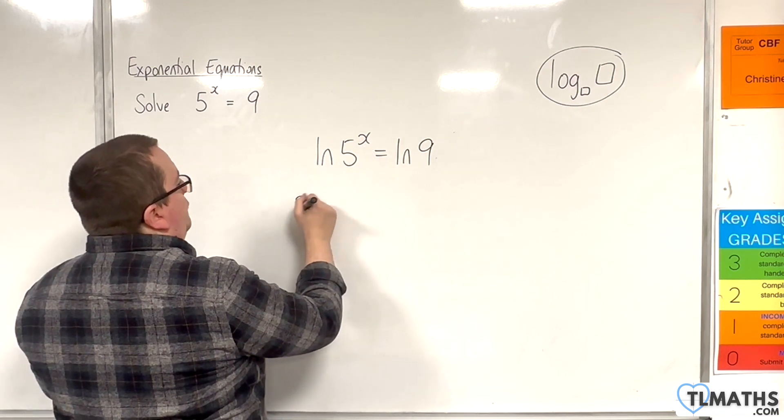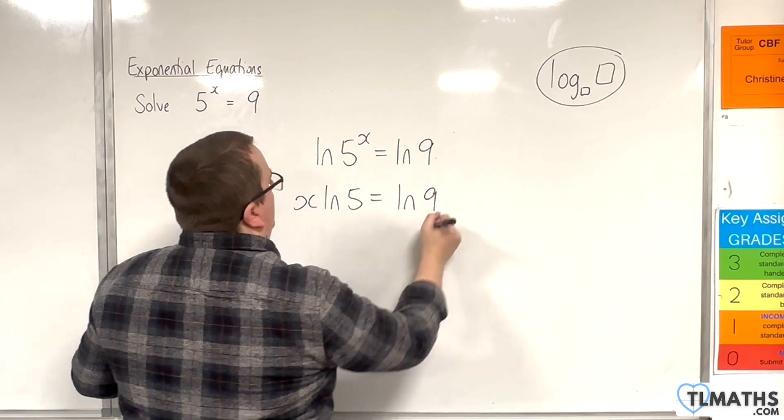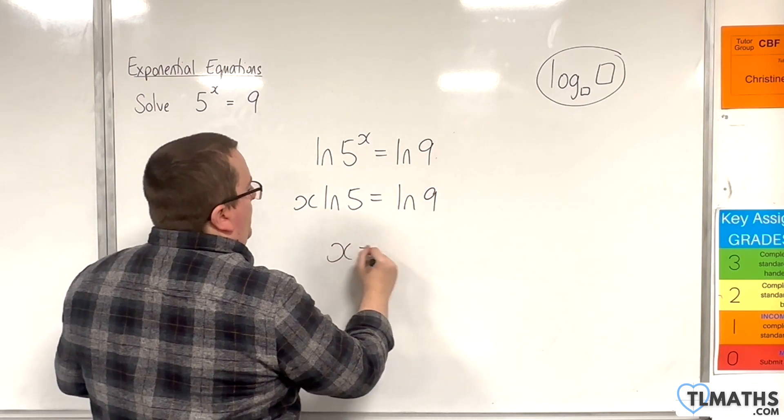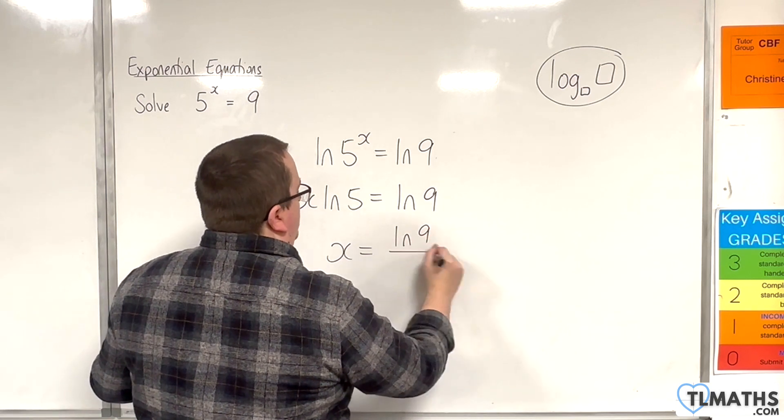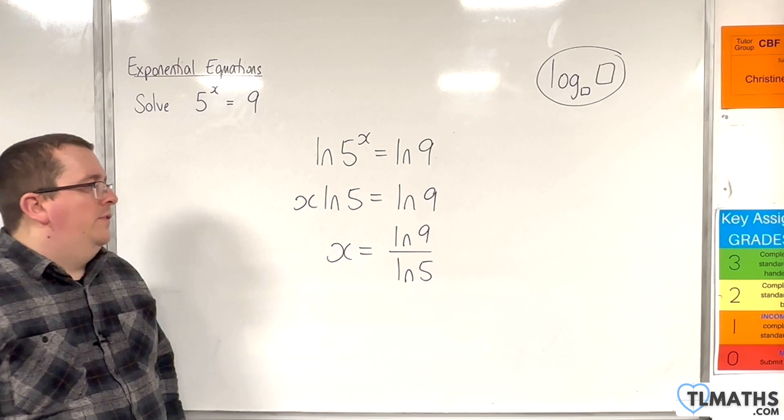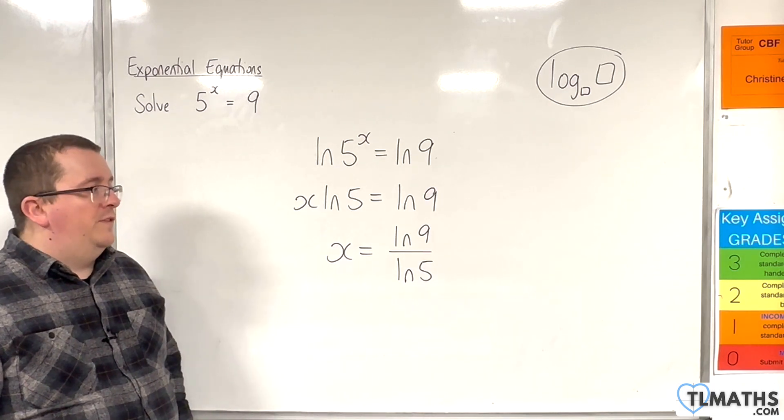I can bring the x down to the front, using the power rule, and then divide both sides by the natural log of 5. So, x is the natural log of 9, divided by the natural log of 5. And that is the exact answer to the original problem, in terms of the natural log.